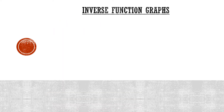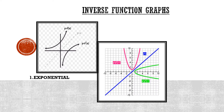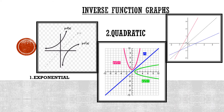Now let us take a look at inverse function graphs. The first one is the exponential graph — f of x is reflected about the dotted line y equals x to give you the new line, which we call the inverse of this graph. The second graph is the quadratic graph. If you take a look at the pink graph, it's reflected about the line y equals x, which is the blue line, and we get the green graph — that one is known as the inverse of this function.